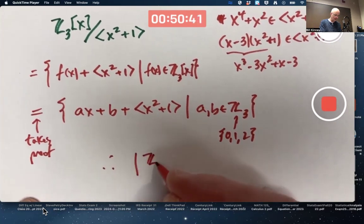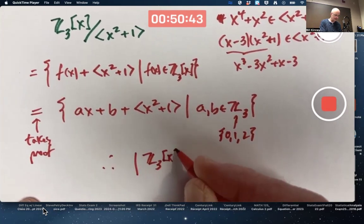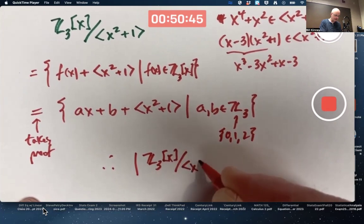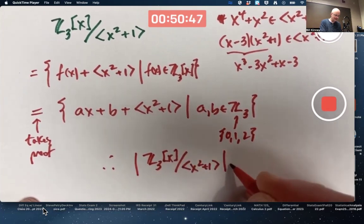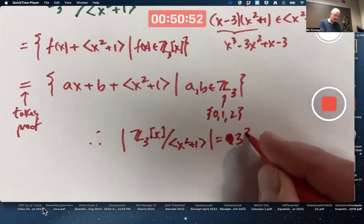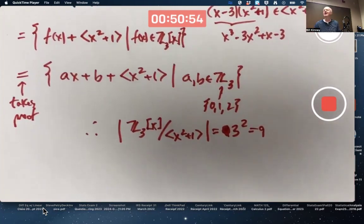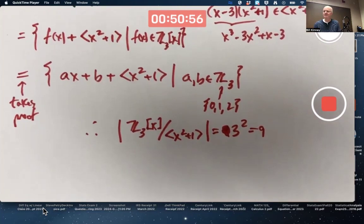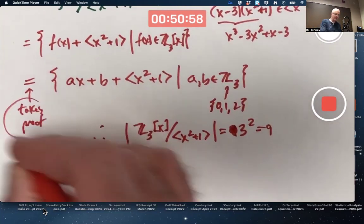Therefore, you could say the order of this factor ring, if we use order notation, is nine. There are nine elements. Already, it is three squared initially. There are nine elements of this factor ring. Though, again, this part takes proof.